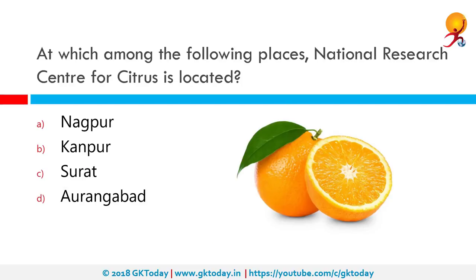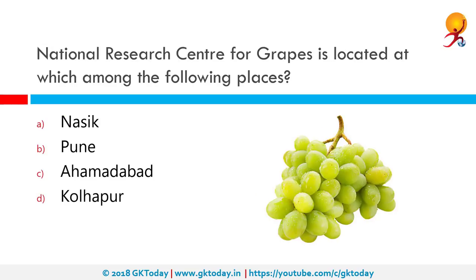The National Research Center for Citrus is located at Nagpur in the state of Maharashtra, which has been famous for mandarin oranges. The National Research Center for Grapes, under the Indian Council of Agricultural Research, New Delhi, was established on 18 January 1997 at Manjari in Pune. Its mandate includes strategic and applied research on safe grape production, transfer of technology, and serving as a national referral laboratory for food safety and pesticide residue in fruits.